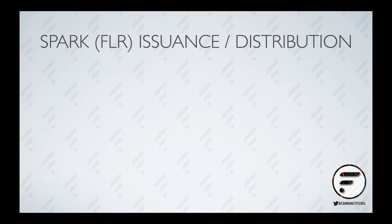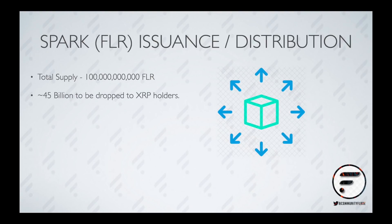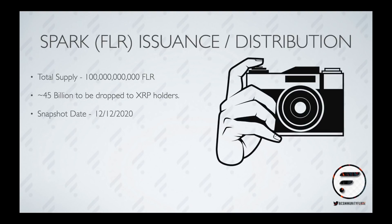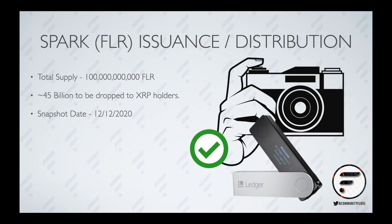Spark issuance: 100 billion SPARK tokens will be created to mirror the quantity of XRP that exists. Around 45 billion of that will be distributed to XRP holders, with the remainder going to the Flare Foundation. A snapshot was taken upon the first ledger close on the 12th of December 2020. If you were holding XRP at this particular time, there is a good chance you can claim your SPARK tokens. If you had your XRP stored on a hardware wallet such as a Ledger or Trezor or similar device, there is a claim process that you must manually complete within the next five months. Details of how you can claim can be found in the description of this video.